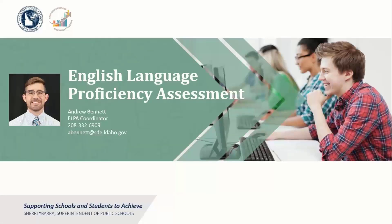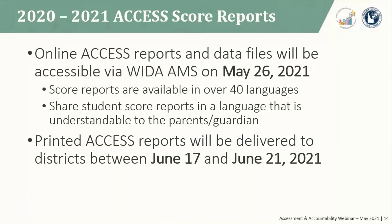Good morning, Idaho. Individual student ACCESS score reports will be available electronically via WIDA AMS on May 26, 2021, and district and school frequency reports will also be available at that time. The individual student score reports can be downloaded in over 40 languages through the WIDA AMS portal. Test coordinators should share these reports with parents and/or guardians in a language that is accessible so that they may interpret their child's performance on the annual English language proficiency assessment. Printed ACCESS reports will be delivered to your districts between June 17th and June 21st. It is best practice to add a child's individual student report to their cumulative file.